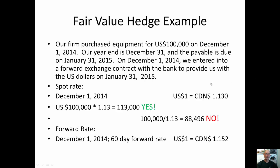Here's our example. On December 1, 2014, we're purchasing equipment from the US for US $100,000. We have a December 31 year-end and our payable is due at the end of January 2015. So we'll need to do an adjustment at the end of December and an adjustment for the foreign currency again at the end of January. Also on December 1, we enter into a forward exchange contract to provide us the 100,000 US dollars.